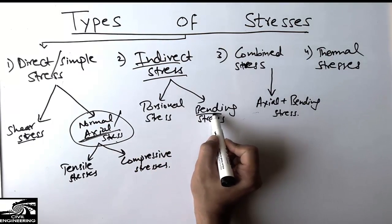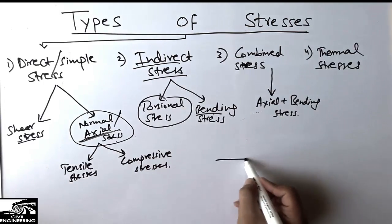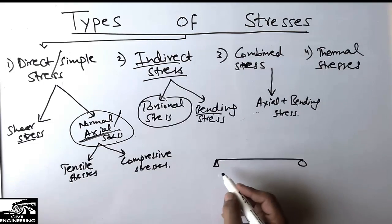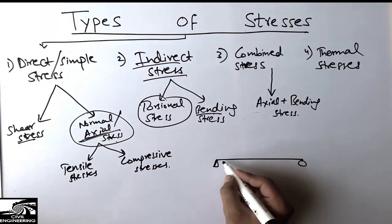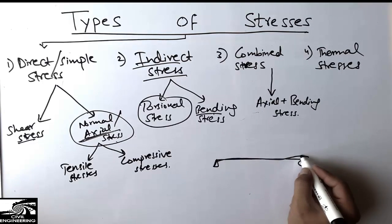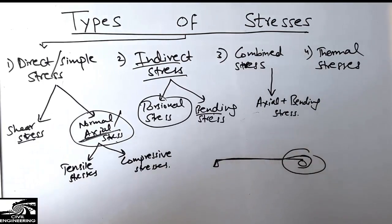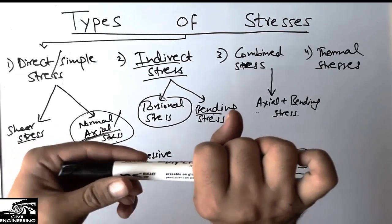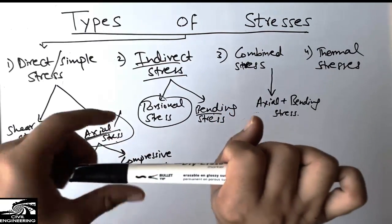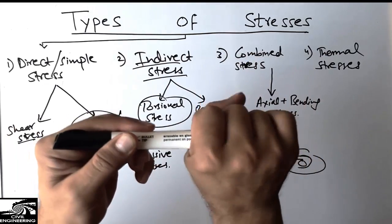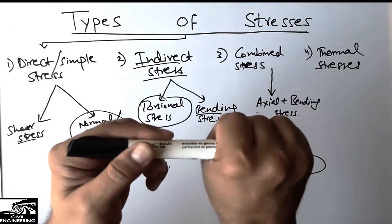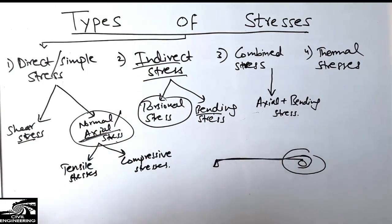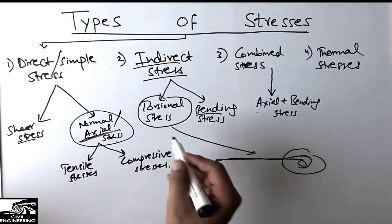Indirect stresses include torsional stress and bending stress. Torsional stress is created when an object is twisted around its own neutral axis. For example, when a beam is fixed at one end and a load causes it to rotate or twist about its neutral axis, torsional stresses are created in that member.